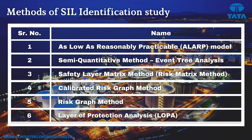As per IEC standards, there are six methods for carrying out SIL identification study. Of these, method number 4 — the calibrated risk graph method — and method number 6 — layers of protection analysis (LOPA) — are the two quantitative methods most popular for SIL identification in industry.